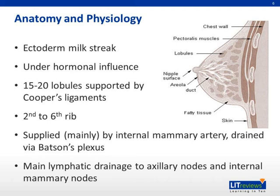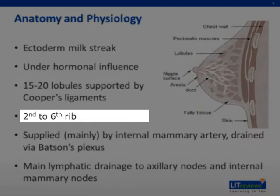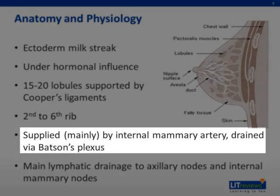A commonly asked question in theater is: describe the margins of the breast. The base of the breast extends from the second to sixth ribs and is bound medially by the lateral margin of the sternum and laterally by the mid-axillary line. The arterial supply of the breast is mainly from the internal mammary artery, which also goes by the name internal thoracic artery.